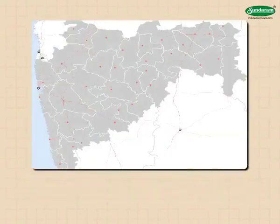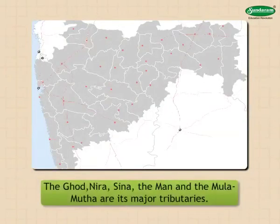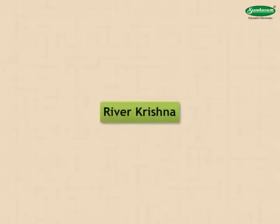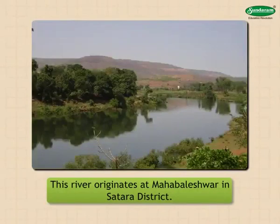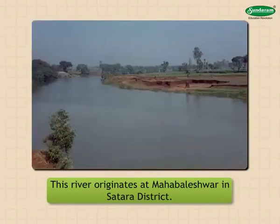River Bhima originates at Bhimashankar in Pune district. The Ghod, Nira, Sina, Man, and Mula-Mutha are its major tributaries. The river Bhima meets the river Krishna in Karnataka state. River Krishna originates at Mahabaleshwar in Satara district. The Koyna, Yerala, Varna, and Panchganga are its major tributaries.